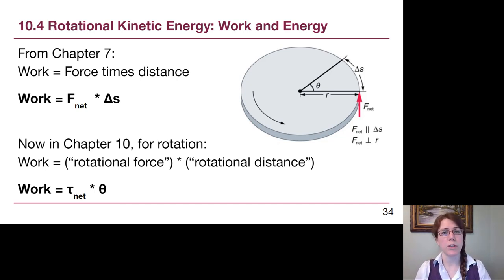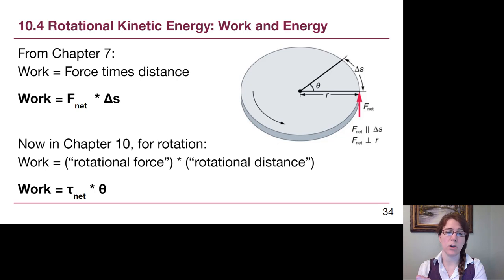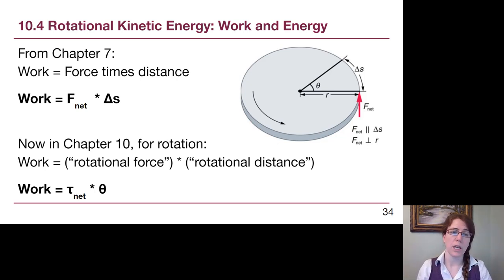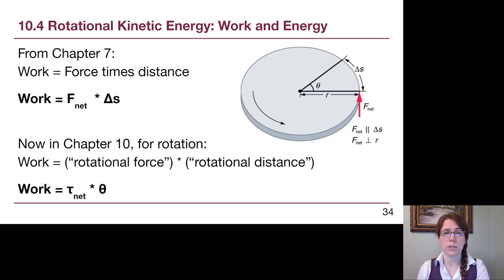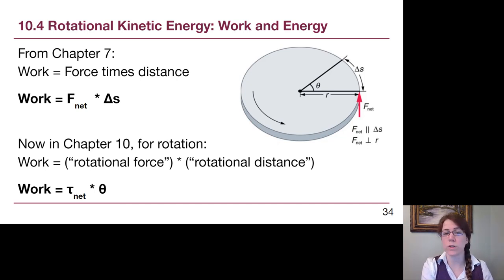If we think about Chapter 7, the idea of work was force in the direction of motion times distance. For Chapter 10, we have that same general idea: rotational force times rotational distance. We can write down this idea that work, when we are causing something to rotate, can be written as torque — the rotational equivalent of force — times theta, which is the angular distance or amount of rotation.